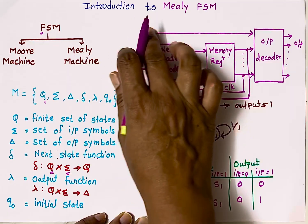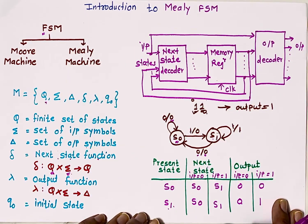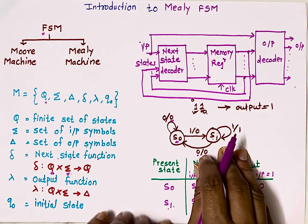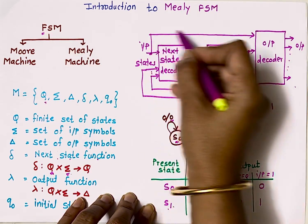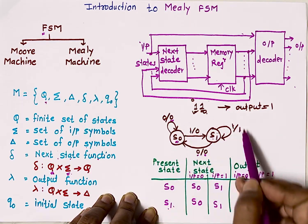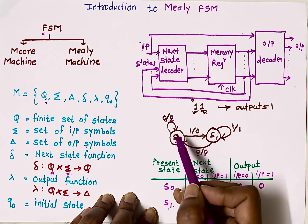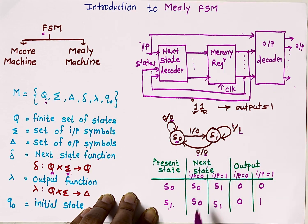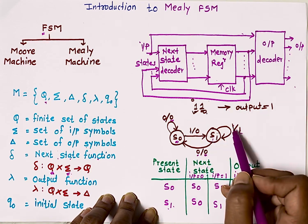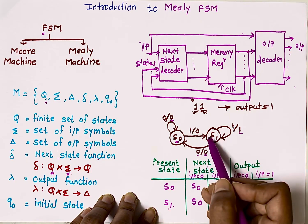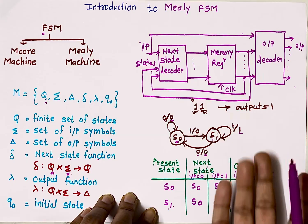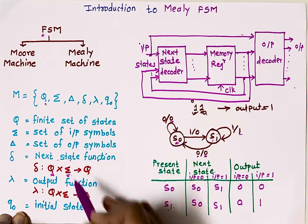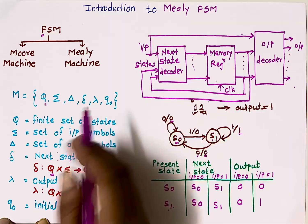For exam purposes, remember: in Mealy machines, output depends on present state as well as present input — the externally applied input. Based on that you draw the state diagram. For every state there are two possible outputs — for state S1, possible outputs are 1 and 0 — so output doesn't only depend on state, it also depends on input. The state table has present state, next state, and output as important columns. These parameters apply to both Mealy FSM and Moore FSM.